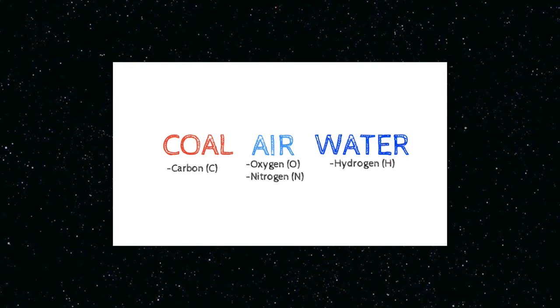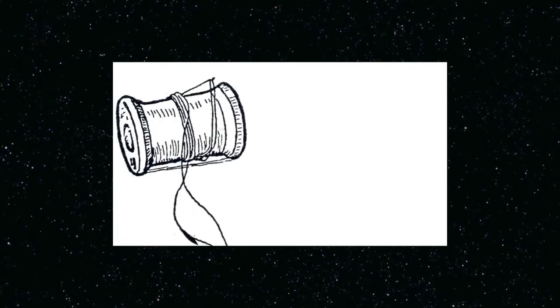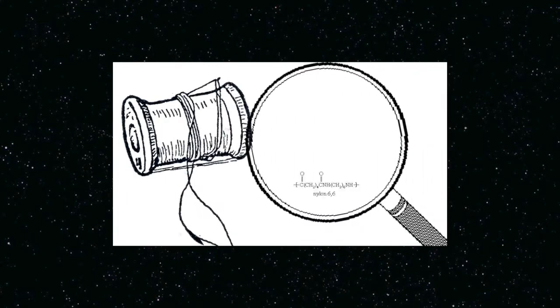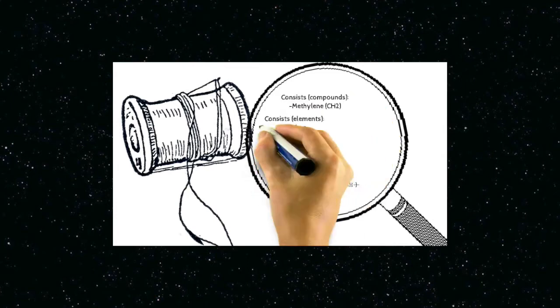The raw materials are coal, air, and water. Those raw materials are basically elements: carbon, hydrogen, nitrogen, and oxygen, while the compound in the nylon is methylene, CH2. Even though nylon has lots of kinds, the most common one is the N6.6 like the molecular structure below.